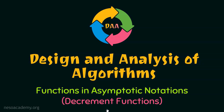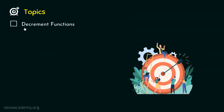From this presentation onwards, we will understand different types of functions in asymptotic notations. In this lecture, we will discuss decrement functions, which is the first type that we are going to discuss. We will properly understand decrement functions through examples, and I will propose one problem based on decrement functions. Let's get started and try to understand what decrement functions are.